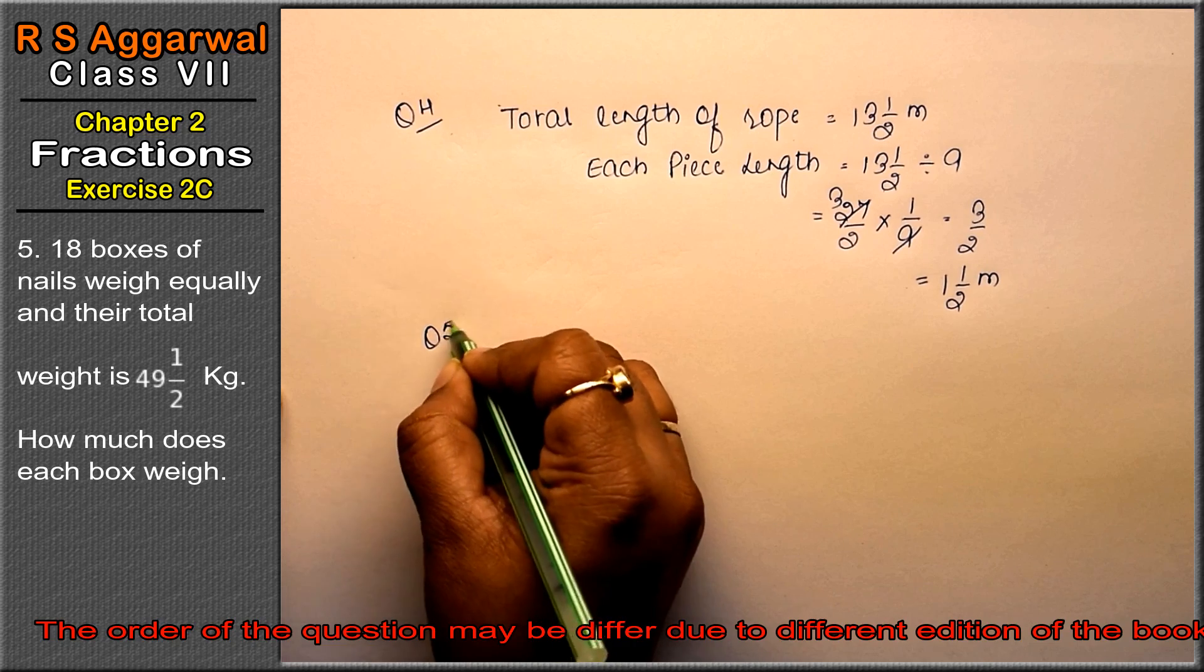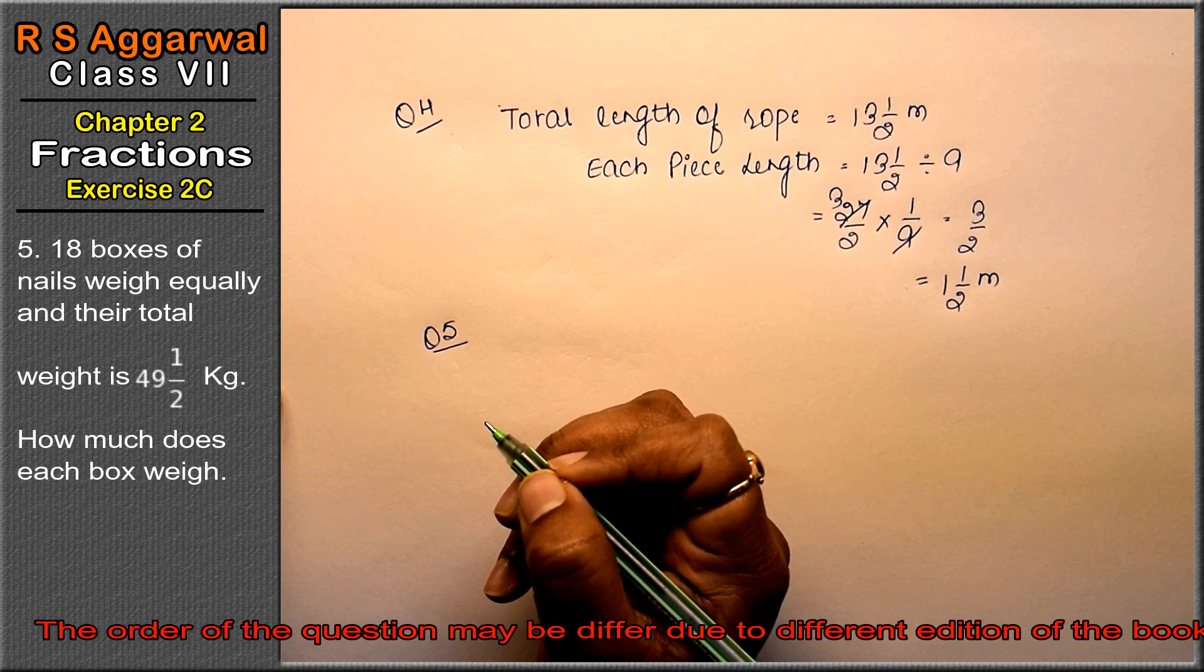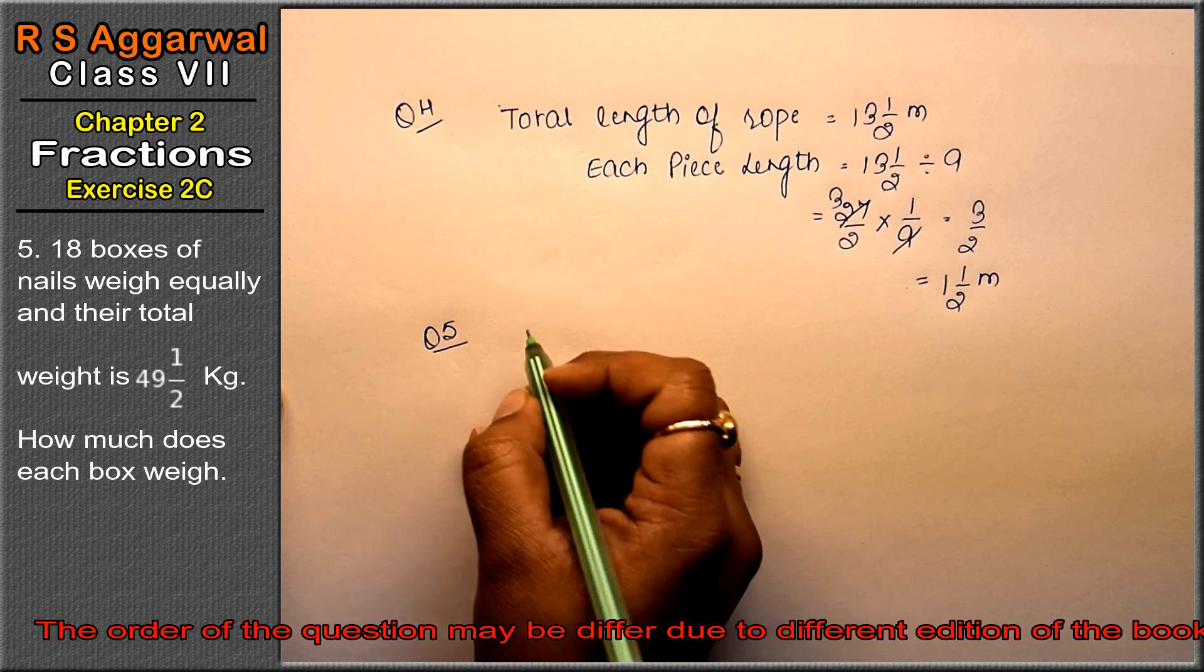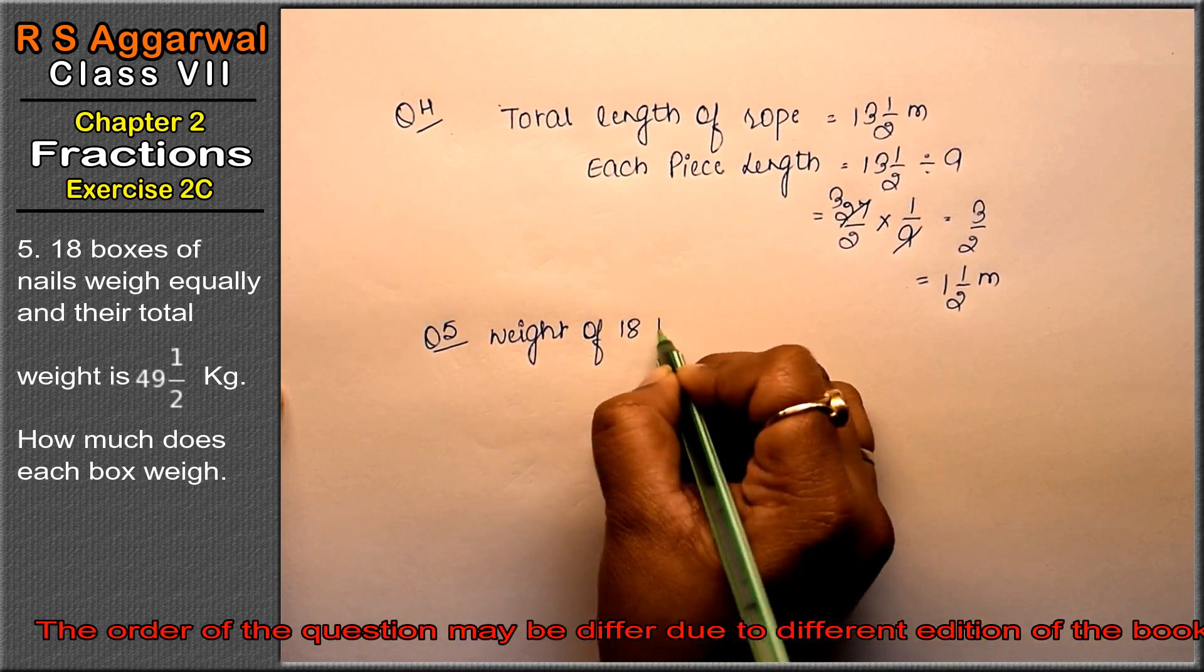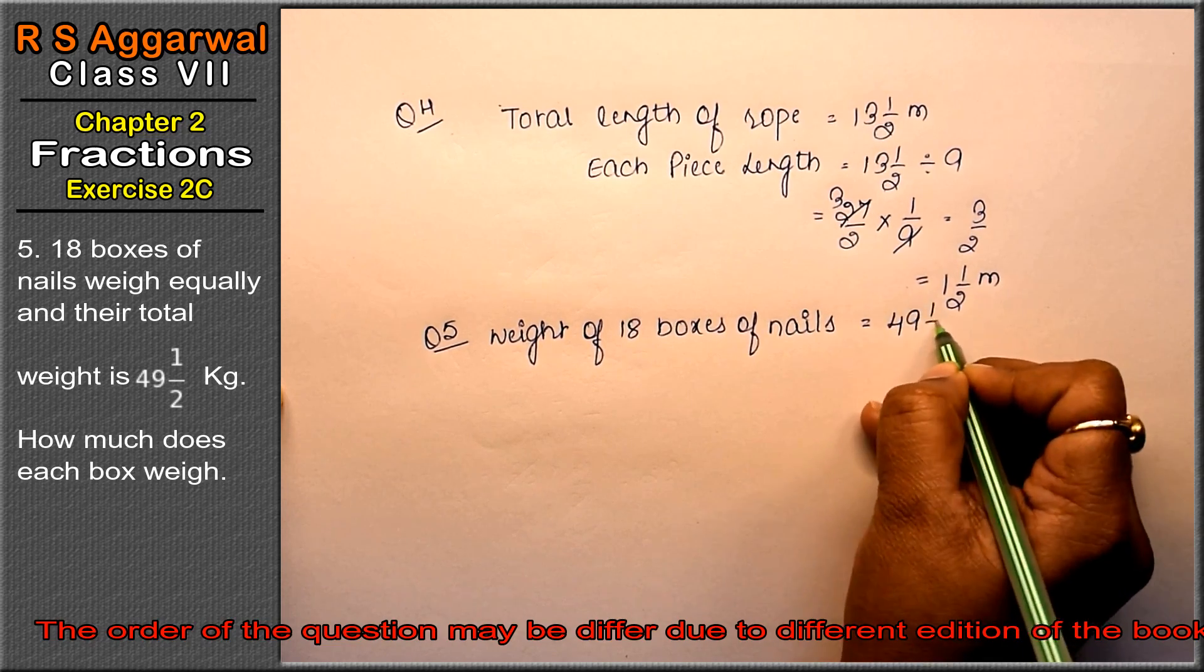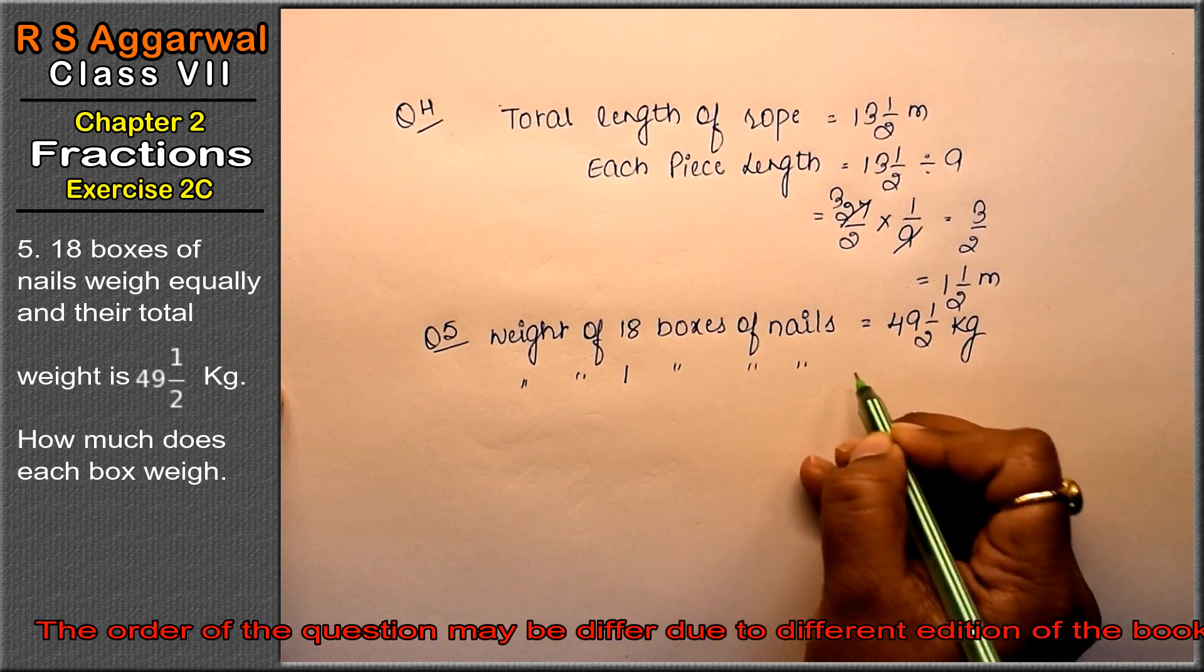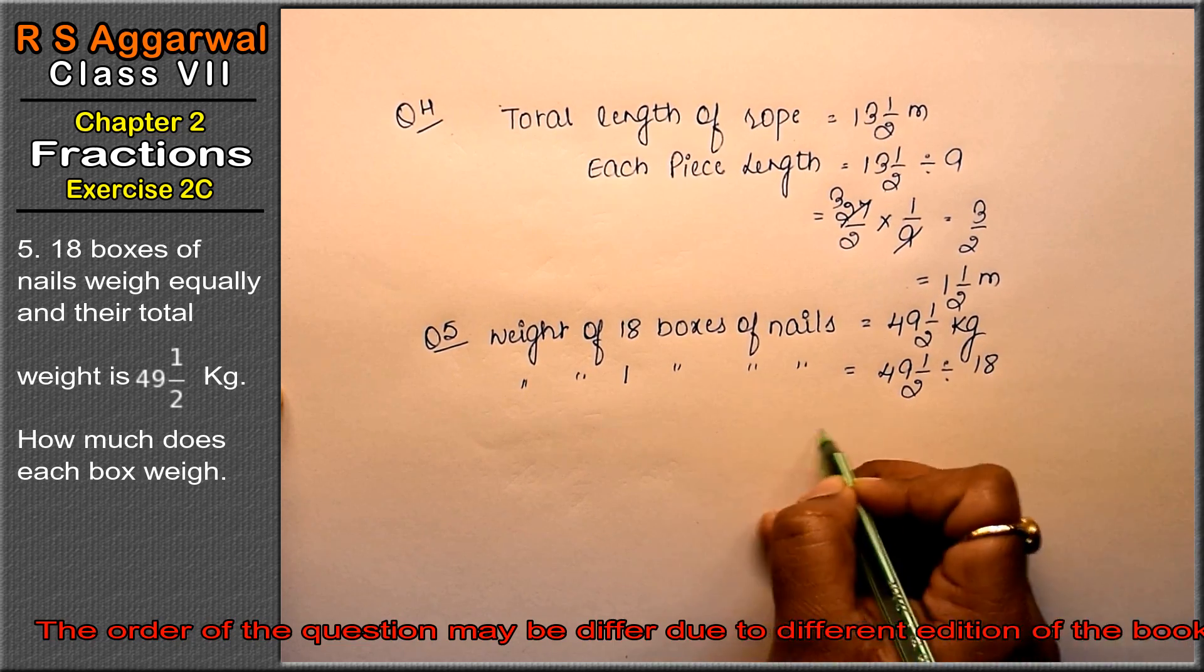Let's do question number 5 of exercise 2C. Question number 5 is: 18 boxes of nails weigh equally and their total weight is 49 whole 1/2 kg. We have to find one box's weight. So we divide by 18.